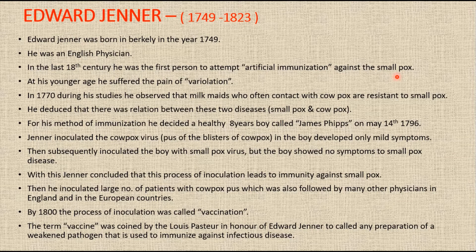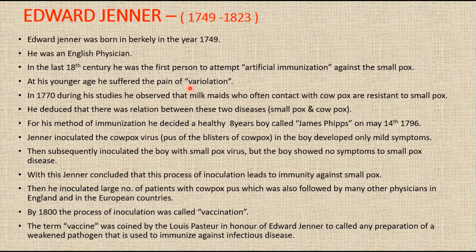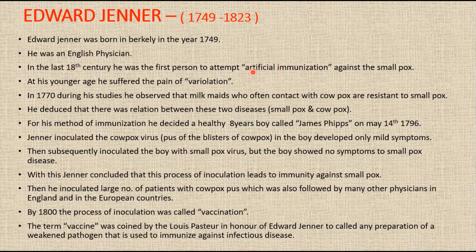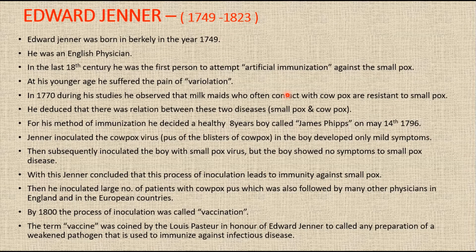Edward Jenner is credited with the discovery of a safe and efficient method of immunization against smallpox. Jenner, an English country physician, developed the method of vaccination — that is, artificial immunization against the virus called the smallpox virus. This vaccination deals with the introduction into the human skin of the cowpox-causing virus, which is called vaccina or vaccinia.